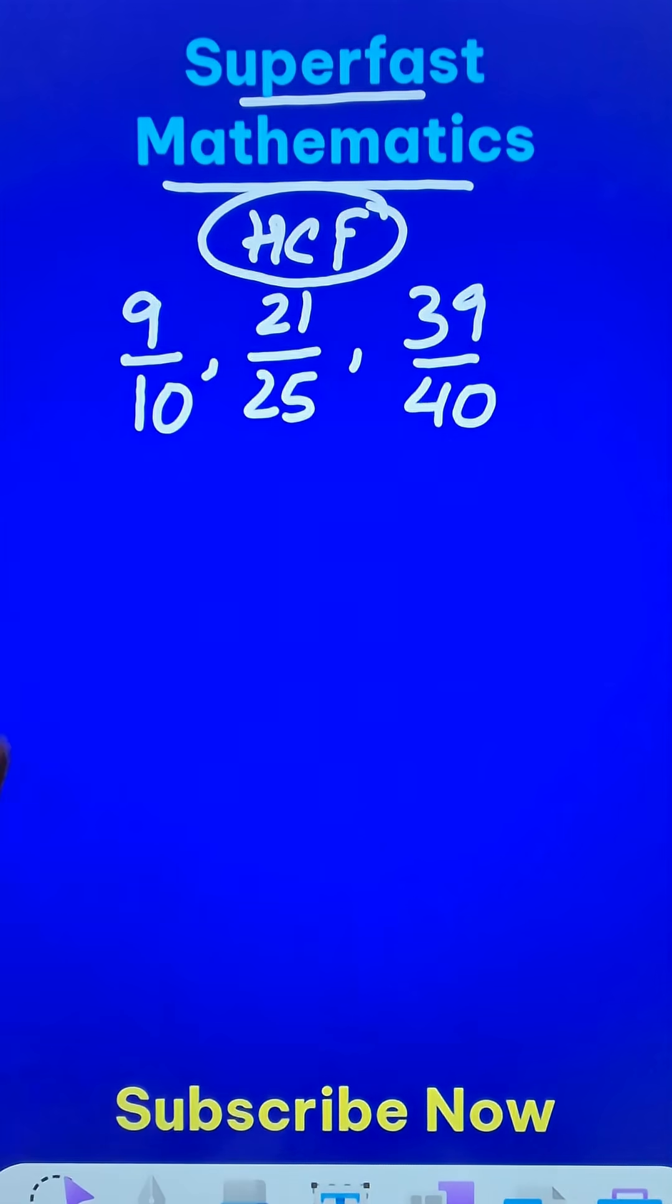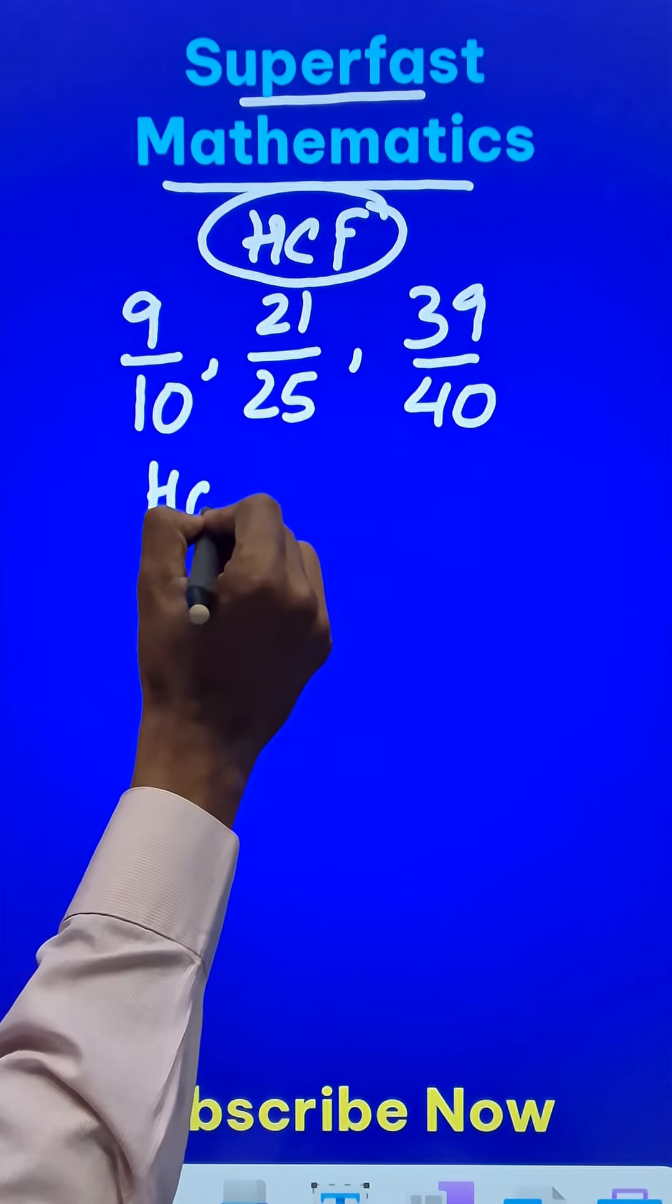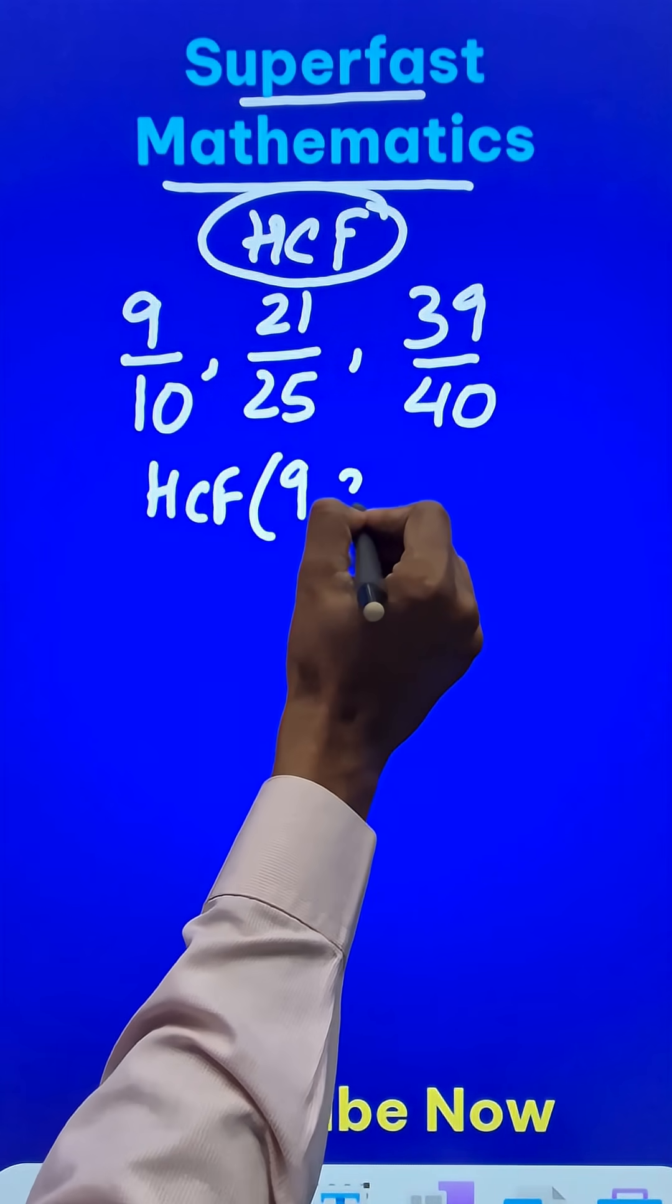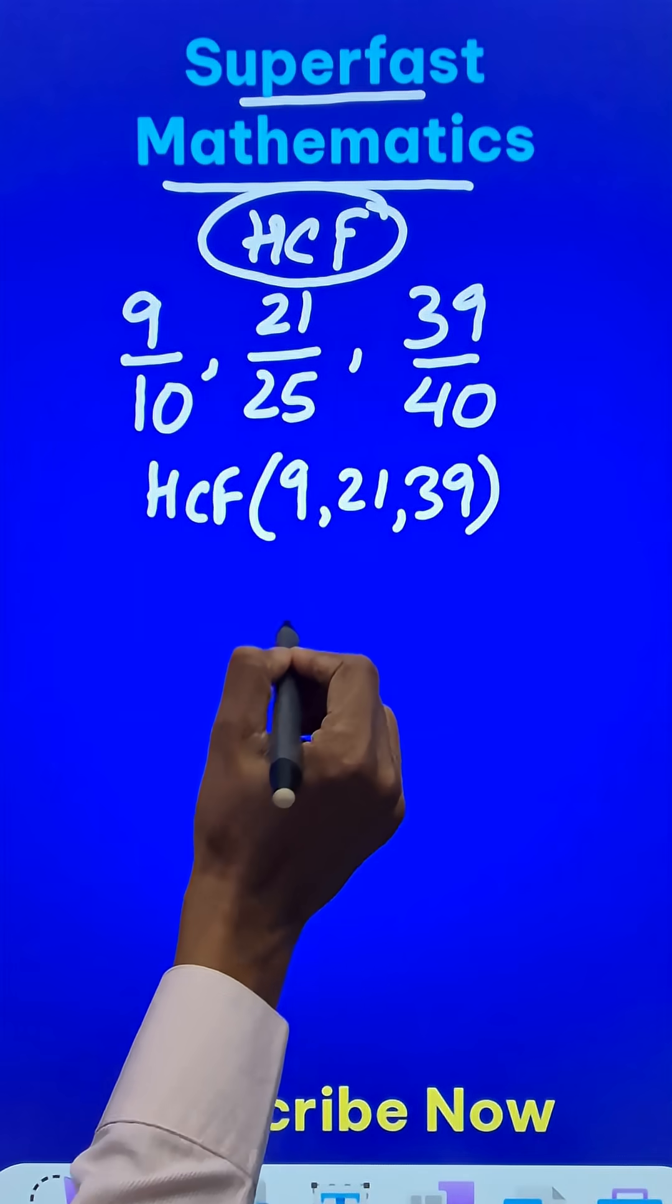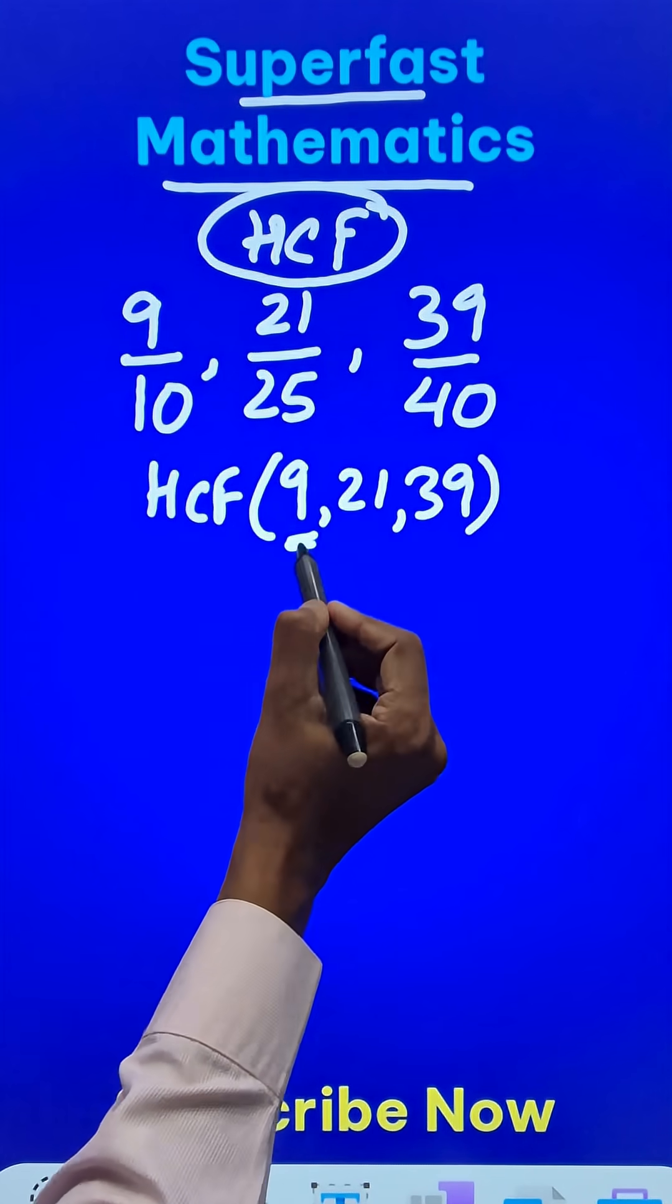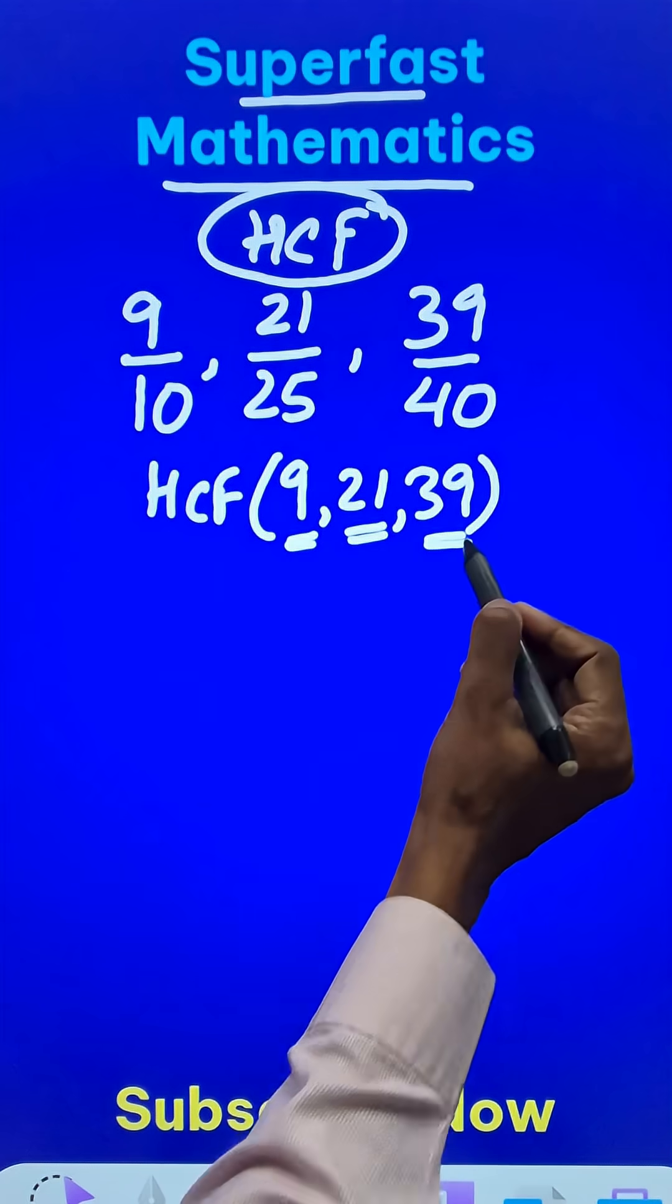When finding the highest common factor, we need to find the highest common factor of the numerators only, and then we will have the next step. As you can see, this is 3 into 3, this is 3 into 7, and this is 3 into 13.